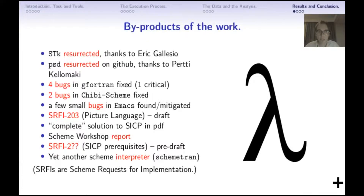As a byproduct of the work, because I had to write the portability layer and contact experts to recover some almost-lost knowledge, the work had quite a lot of byproducts. Several bugs were fixed in GNU Fortran, and several bugs were fixed in the Scheme implementation I was using. I chose Chibi Scheme because it is probably the most accurate implementation of the latest version of the Scheme standard R7RS Large — not yet released, but the closest approximation. In order to solve the SICP problem set portably, I actually had to write two Scheme Requests for Implementation (SRFIs) — one already submitted, the other in development.